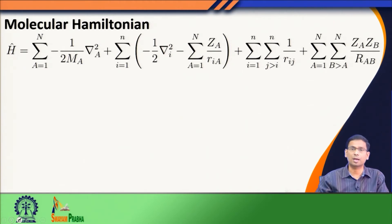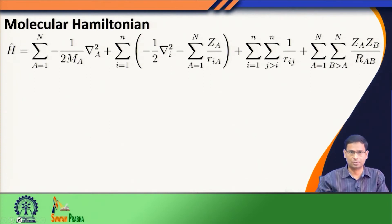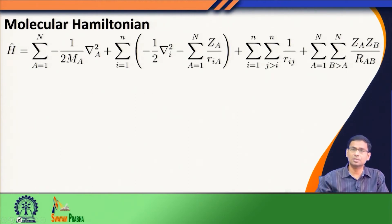For example, we wrote down the molecular Hamiltonian. In a molecule we have several nuclei, and each atom in the molecule also brings electrons. So we have several nuclei and several electrons. When I write down the Hamiltonian of this molecule, I know that the Hamiltonian is the energy operator, so I must keep all those energy terms that can come out of this molecular system.